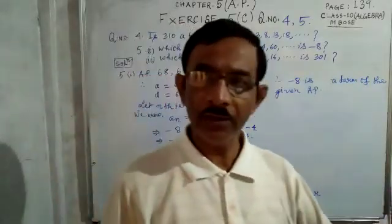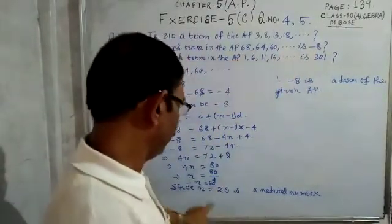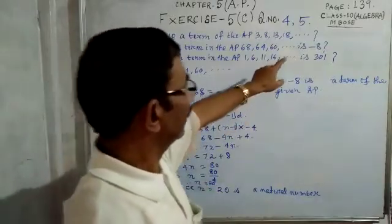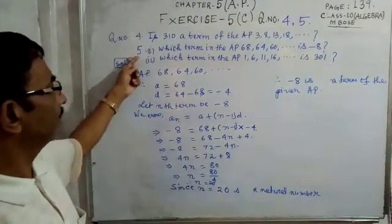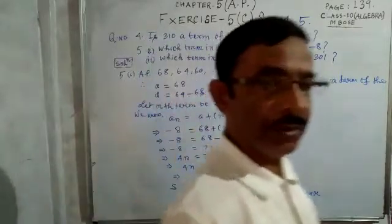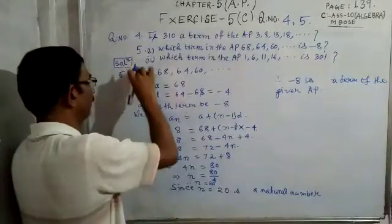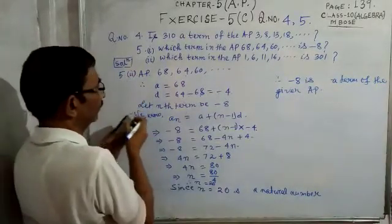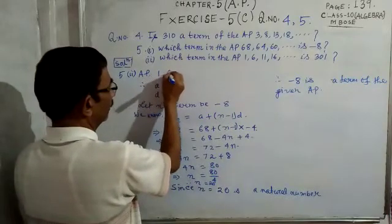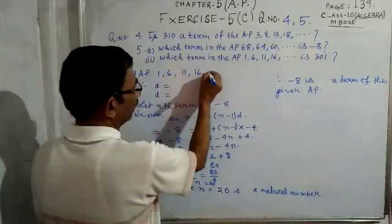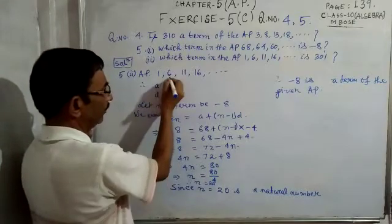Remember: if n is a natural number the value is a term of the AP; if n is a fraction it is not. Now let us do question number 5, sub-number 2. The AP is 1, 6, 11, 16, ...